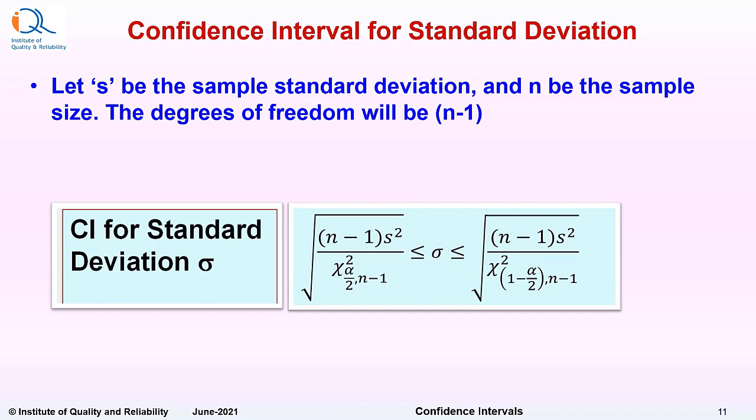The formula shows square root of n minus 1 s squared divided by chi-square alpha by 2, n minus 1. This gives you the lower bound. And the right side of this formula shows square root of n minus 1 into s squared upon chi-square 1 minus alpha by 2 into n minus 1. And this will give the upper bound of the confidence interval.